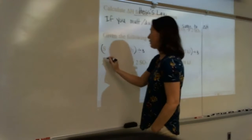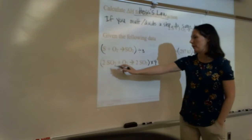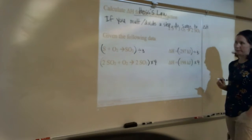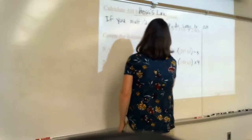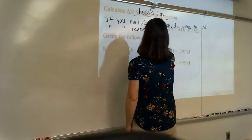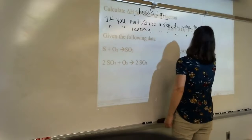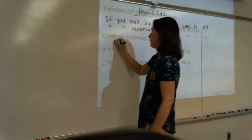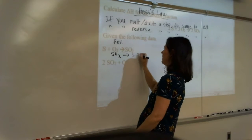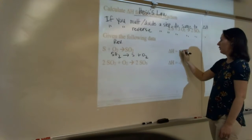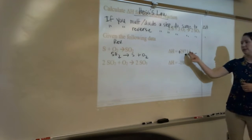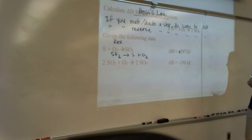If I multiply this reaction times 4, making the coefficients 8, 4, and 8, I would also multiply delta H by 4. The other rule: if you reverse a step, do the same to delta H. So if I reverse a reaction so that SO₂ breaks down into S plus O₂, my new delta H would be positive — reversing a reaction changes the sign of delta H.